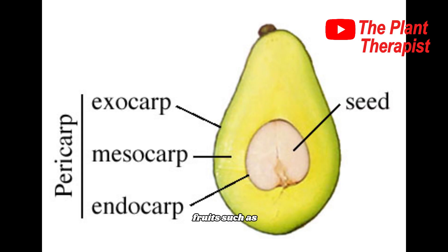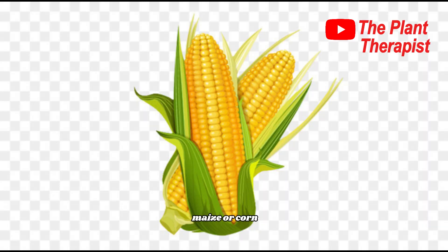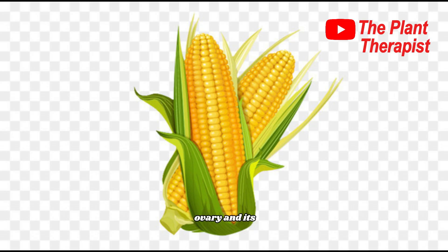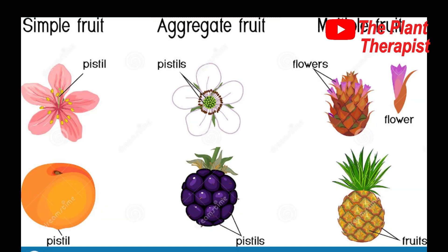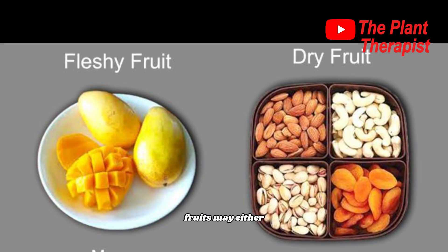These three regions — the endocarp, mesocarp, and exocarp — are collectively called the pericarp. In dry fruits such as maize or corn, the pericarp is usually quite thin. Some fruits consist of only the ovary and its seeds; others have adjacent flower parts such as the receptacle or calyx fused to the ovary, or different parts modified in various ways. Fruits may either be fleshy or dry at maturity.